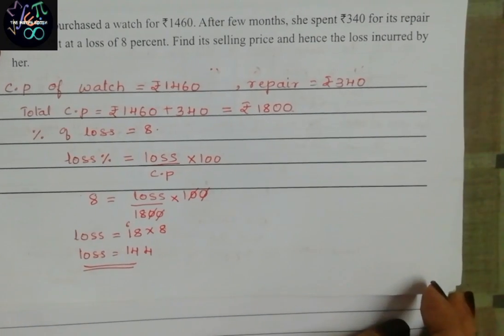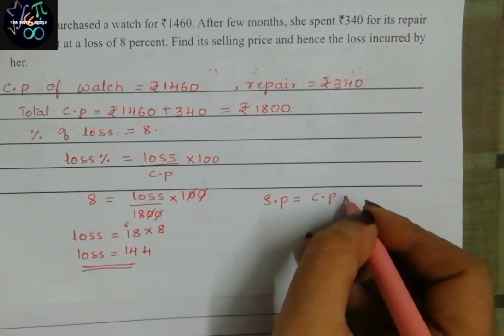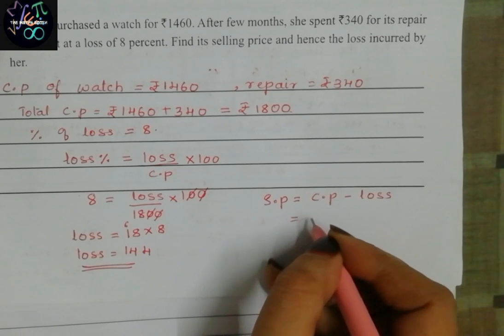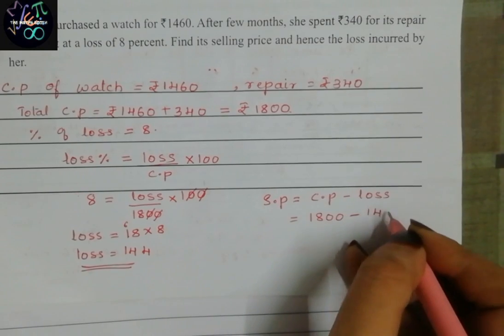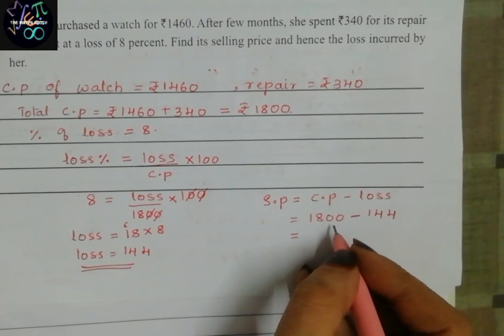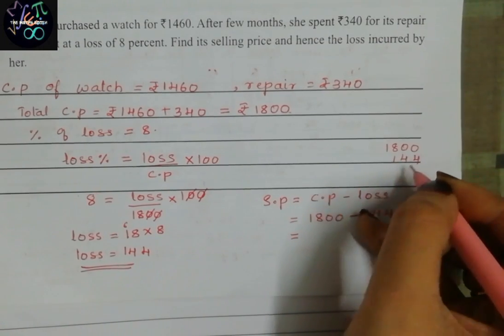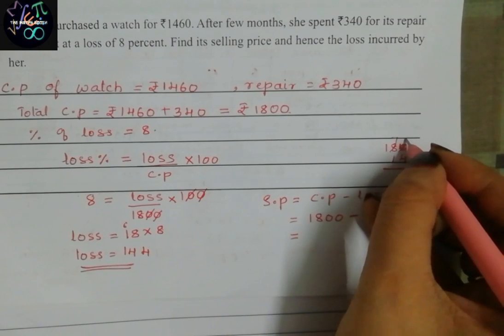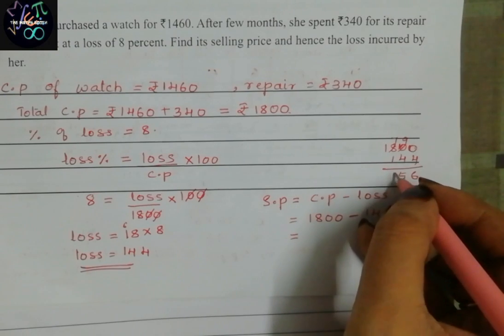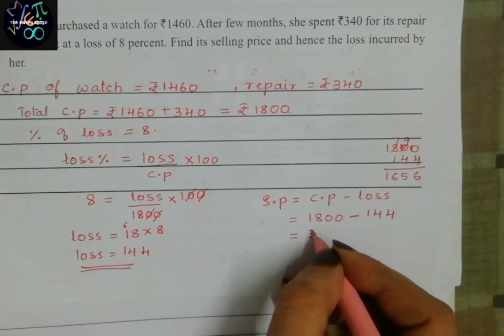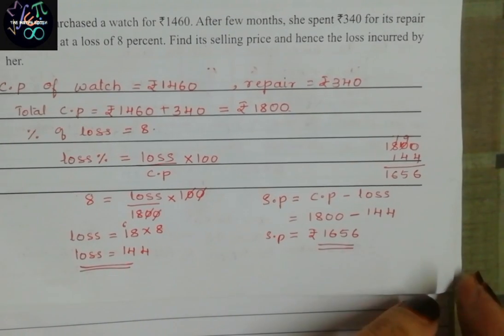Now it's really very easy to find selling price. We know that selling price equals cost price minus loss. So cost price is 1,800 minus loss we got is 144. If we subtract this, 1,800 minus 144 equals 1,656. Rupees 1,656 is the selling price. This completes question number 28.